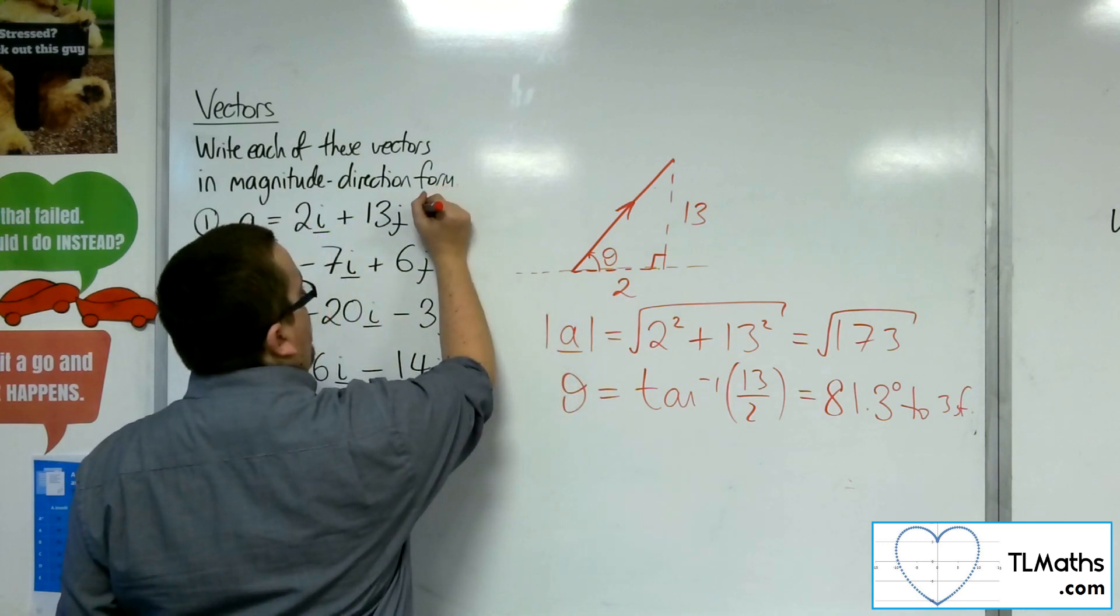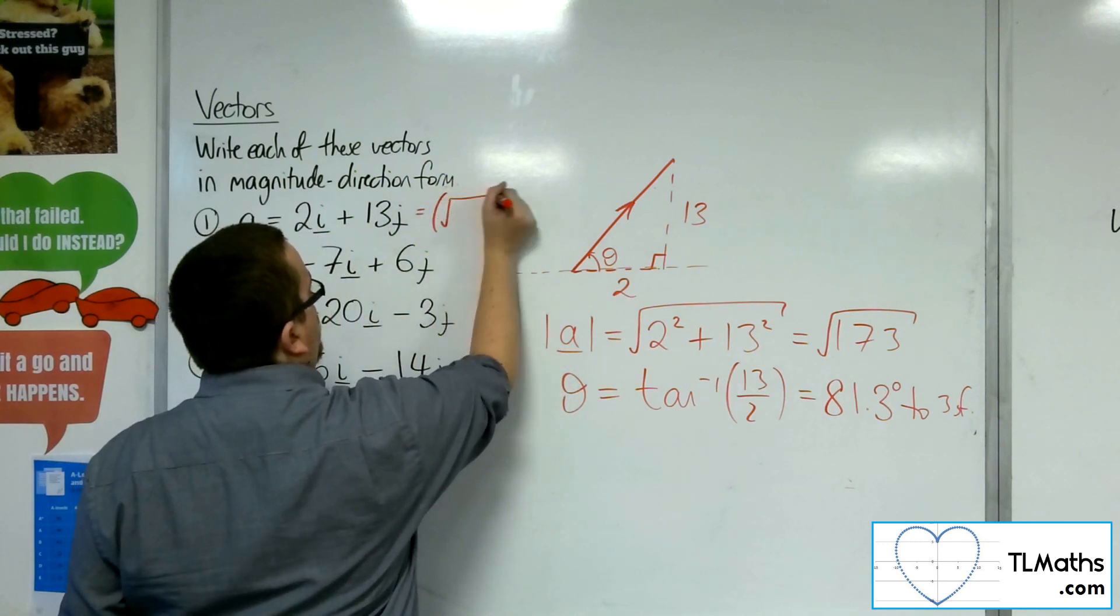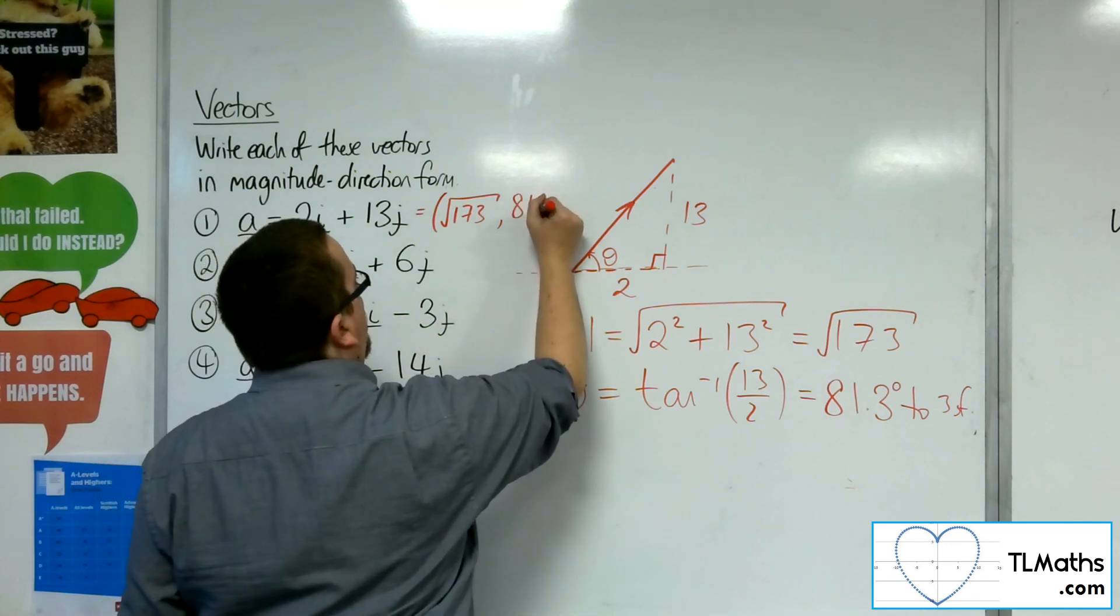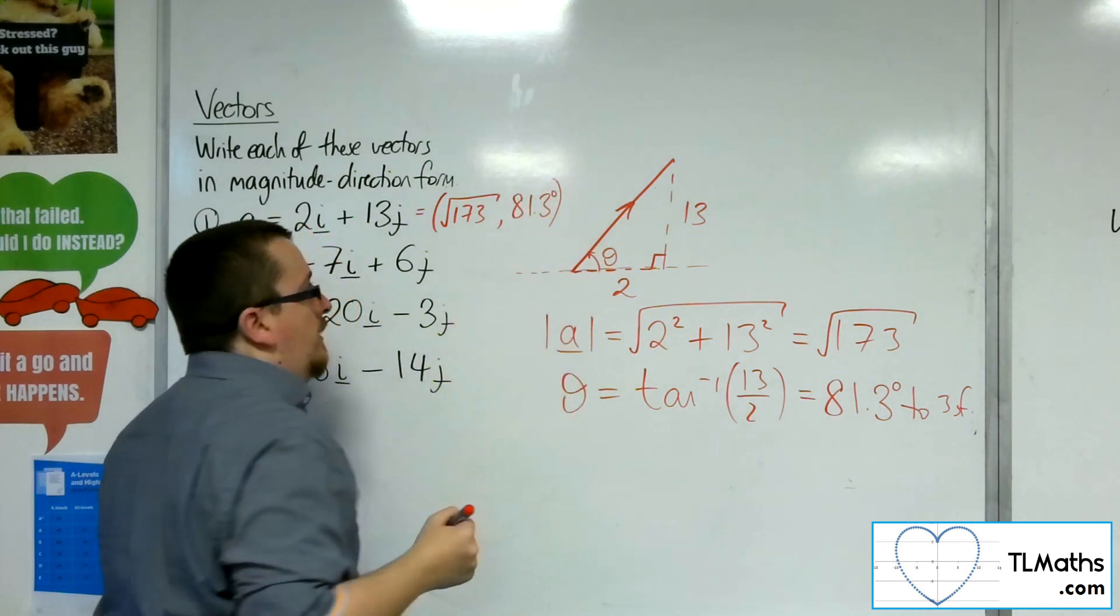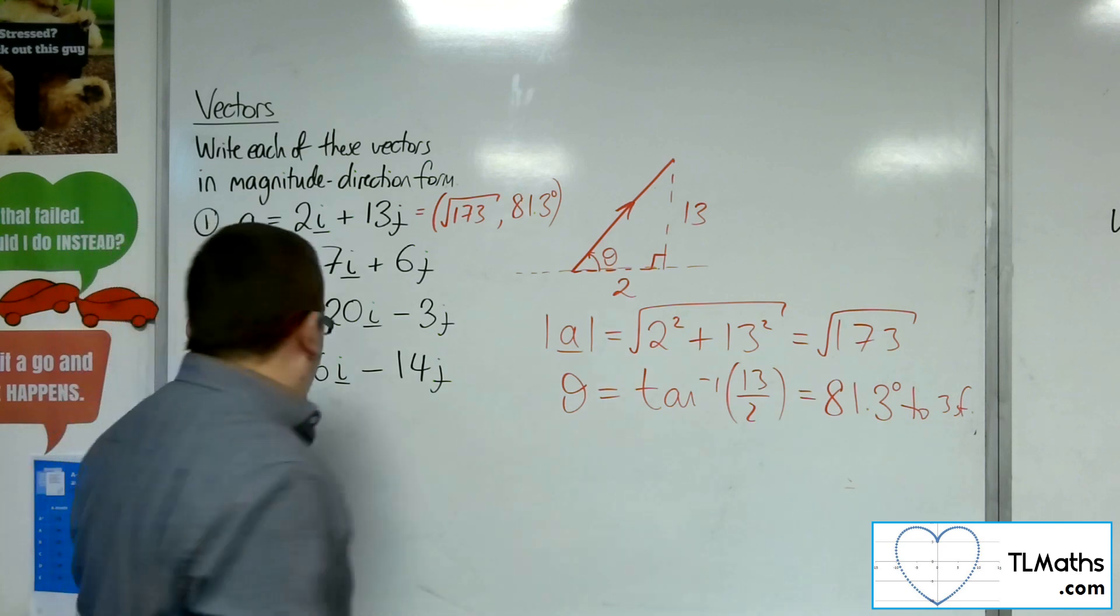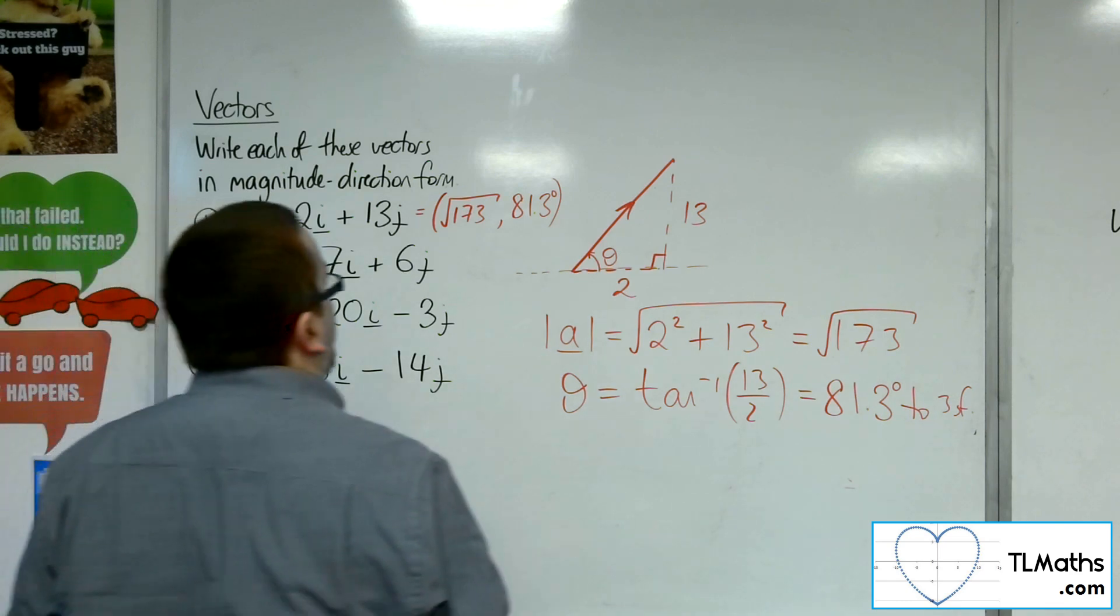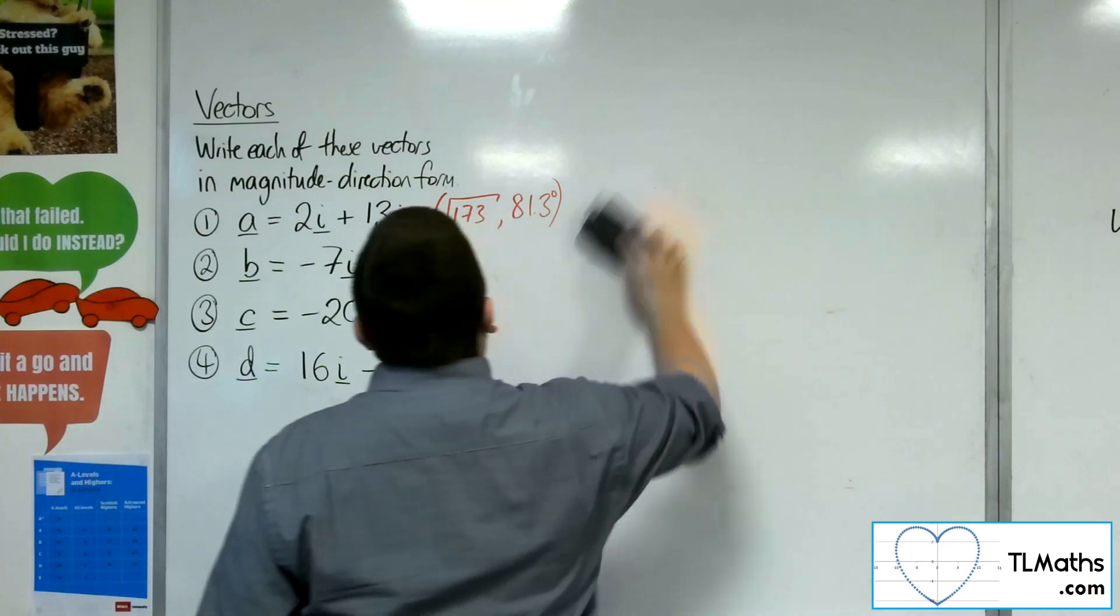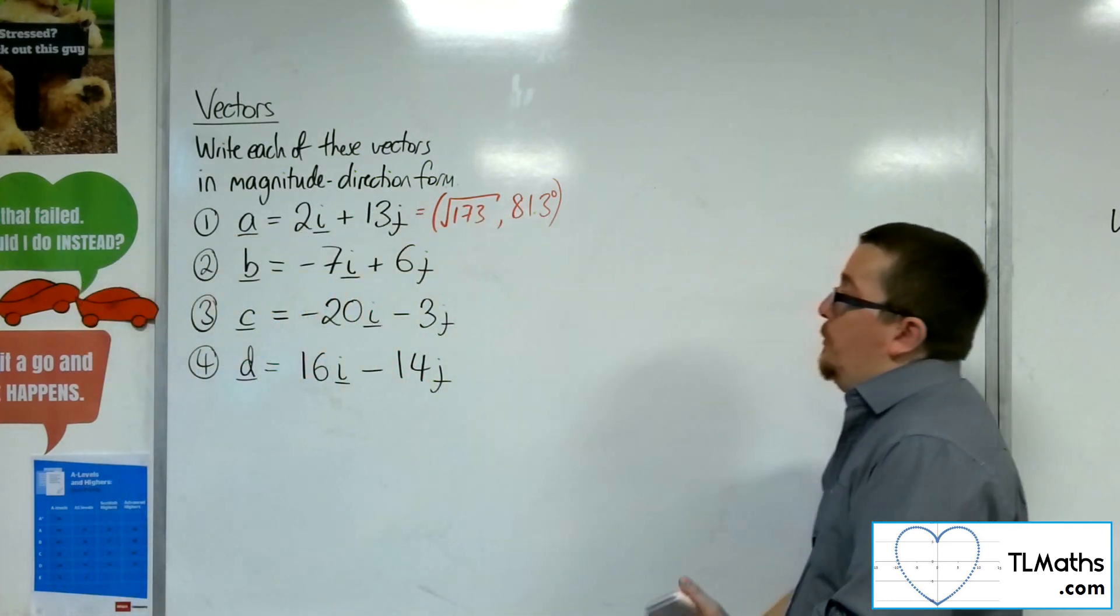So we would write this one as root 173, 81.3 degrees to 3 sig fig. So that would be number 1. Okay, so if we look at number 2.